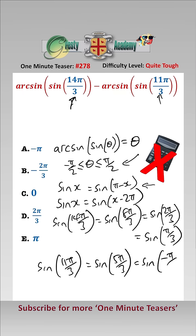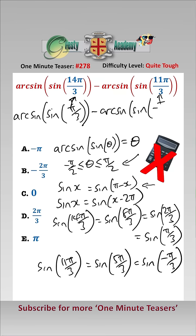So therefore we can rewrite this as arc sine sine of pi over 3 minus arc sine sine of minus pi over 3, and because they're both in this range now we can use our formula.